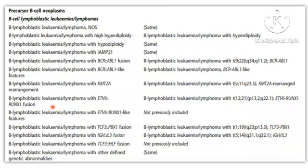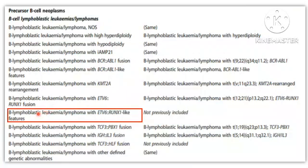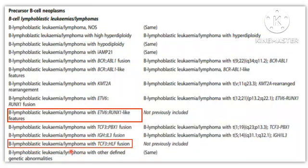There are two translocations which have been added. The first one is B lymphoblastic leukemia/lymphoma with ETV6::RUNX1-like features, which was not there in the fourth edition. The second fusion is B lymphoblastic leukemia/lymphoma with TCF3::HLF fusion, which was also not there in the fourth edition.